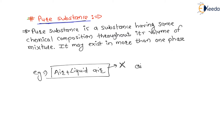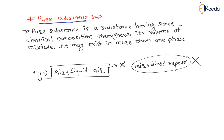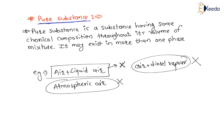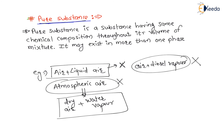Air plus diesel vapor is not a pure substance. Note that air plus petrol vapor is a pure substance, but air plus diesel vapor is not. Atmospheric air is also not a pure substance, because atmospheric air is a mixture of dry air plus water vapor, and any air contains water molecules in the form of vapor as well as dry air.